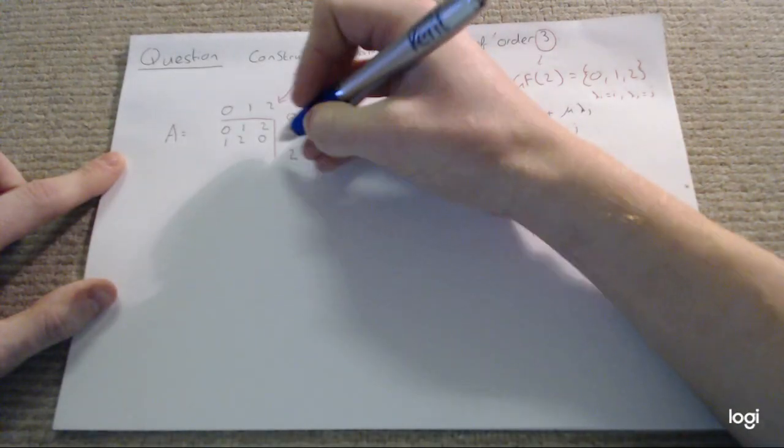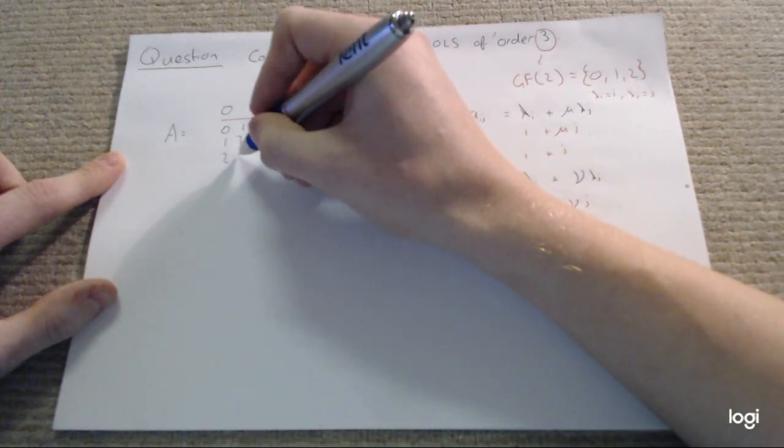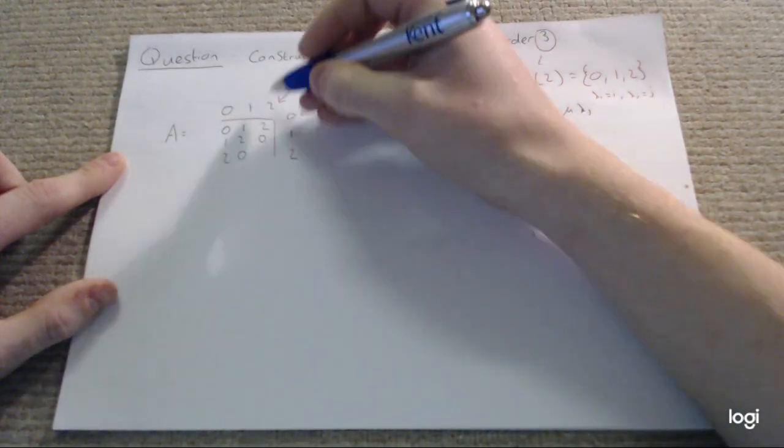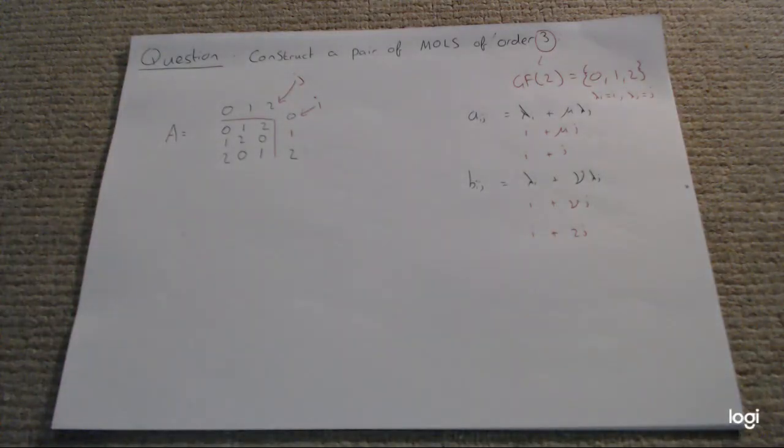Final row: 2 plus 0 is 2, 2 plus 1 is 3 which is equivalent to 0, and 2 plus 2 is 4 which is equivalent to 1. So there's our first Latin square, nice and simple.